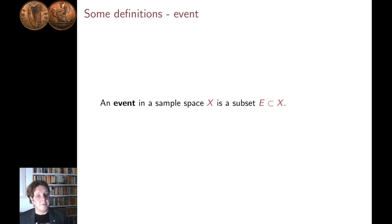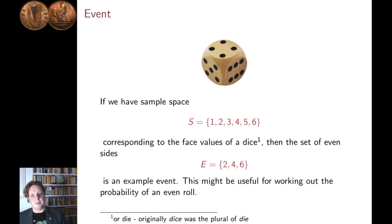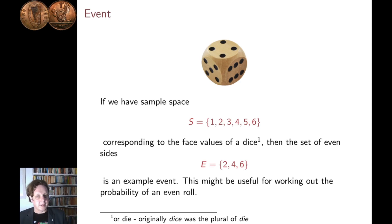The next thing we want to define is an event. An event is any subset of the sample space. Here's an example: we have a dice, and the possible outcomes of rolling the dice are the values one to six. An example of an event is the set of outcomes where the number of dots on the dice face is even. So the event of an even outcome would be {2, 4, 6}. And so E there is a subset of S, the sample space of dice rolls. You might want to work out the probability of that event — so you'd consider it an event and work out the probability of event E.